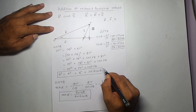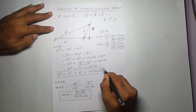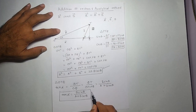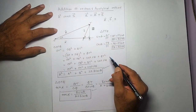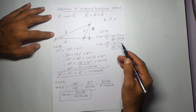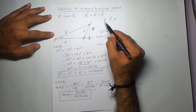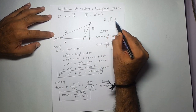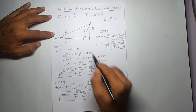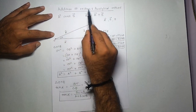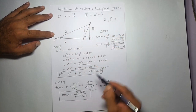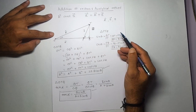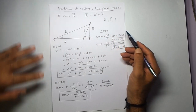If I take the inverse tangent of that quantity I can get alpha, and thus I know the direction of vector R. So we have two formulas: one gives the magnitude of R, and the other gives the direction. This gives us R completely in terms of the two vectors and the angle between them. Simply use these two formulas to find the resultant. Thank you.